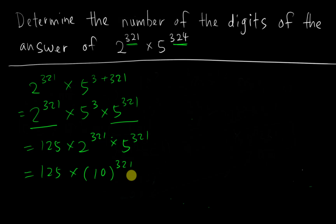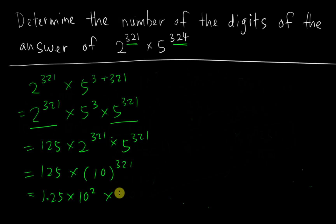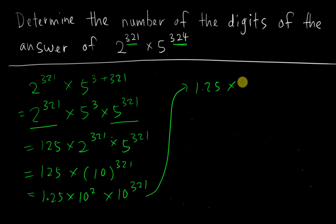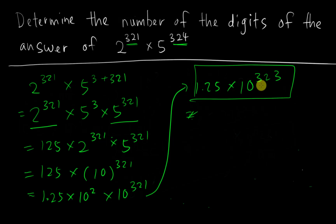At this point we could already estimate the number of digits, but let me convert to standard form. 125 is 1.25 multiplied by 10 to the power of 2, since 1.25 × 100 = 125. So the full expression becomes 1.25 multiplied by 10 squared multiplied by 10 to the power of 321, which equals 1.25 multiplied by 10 to the power of 323. Therefore, the total number of digits is 323 + 1 = 324 digits.